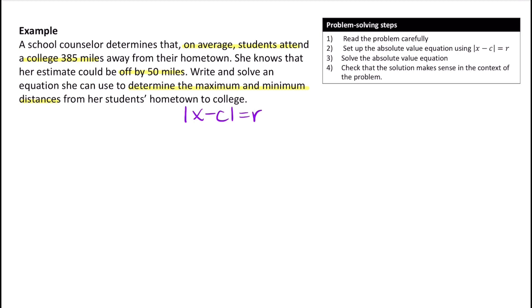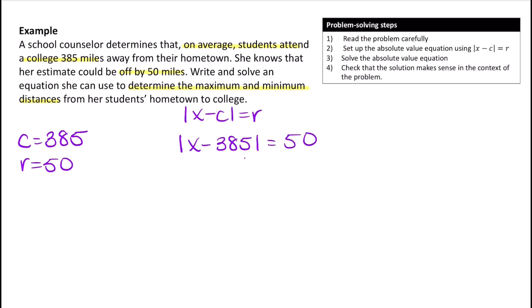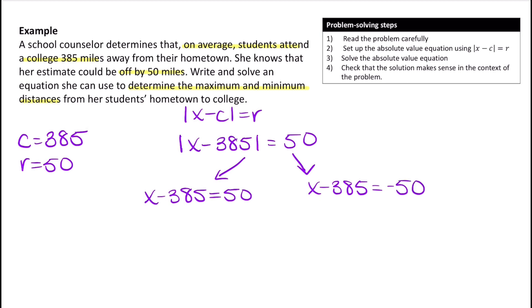We need to identify C and R. C is 385 because that's the average, and R is 50 because that's the range. Plugging those in, we get the absolute value of X minus 385 equals 50. To solve, we separate into two equations: X minus 385 equals 50, and X minus 385 equals negative 50. Adding 385 to both sides of the first equation gives X equals 435.